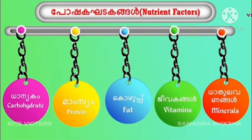Now we have tried to cover the 5 to 6 nutrients: carbohydrates, protein, fat, vitamins, and minerals. This is not the only item in our body. We have to ask questions about the 6 nutrients and the importance of each.